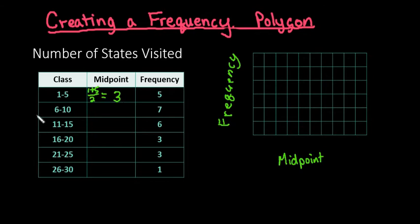I could do the same formula for all of them, or I can just use the class width. The class width is the distance from one lower class limit to the next. To find this, I do six minus one, which gives me five. So the class width is five, which means the midpoint goes up by five for each one.